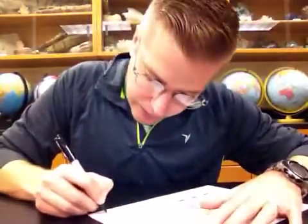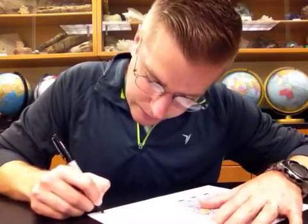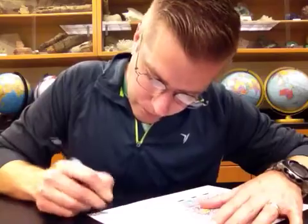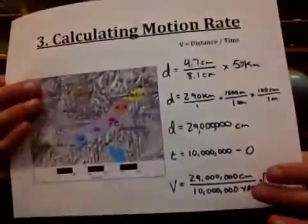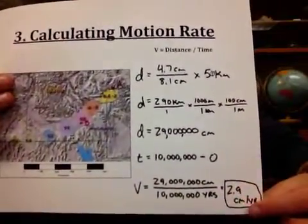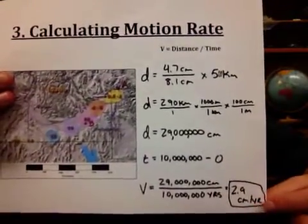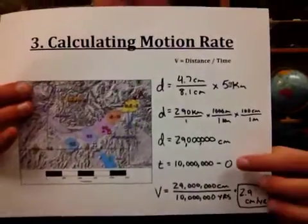We're looking at 2.9 centimeters per year is the average rate that the North American plate has moved over the Yellowstone hotspot in the last 10 million years.